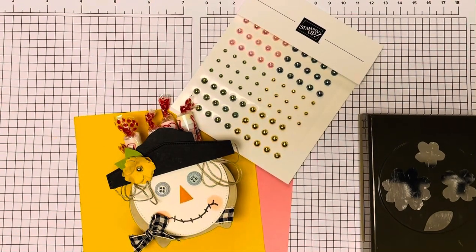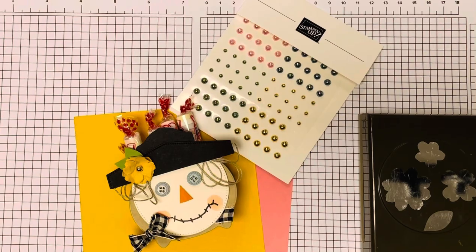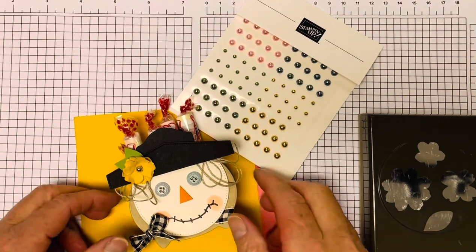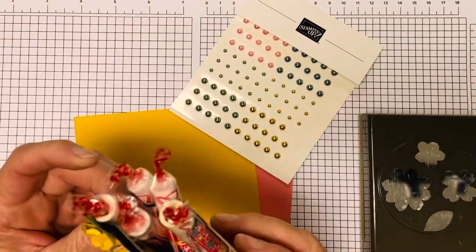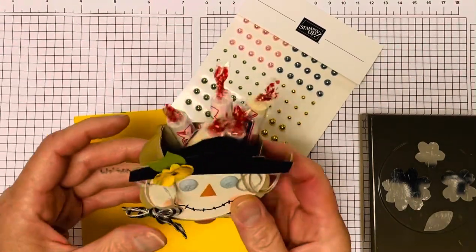Hi everyone, it's Darla at Scrap Happens here with Tuesday's Tip. A couple weeks ago for 3D Thursday, I made this cute little scarecrow using one of our new Halloween bundles.